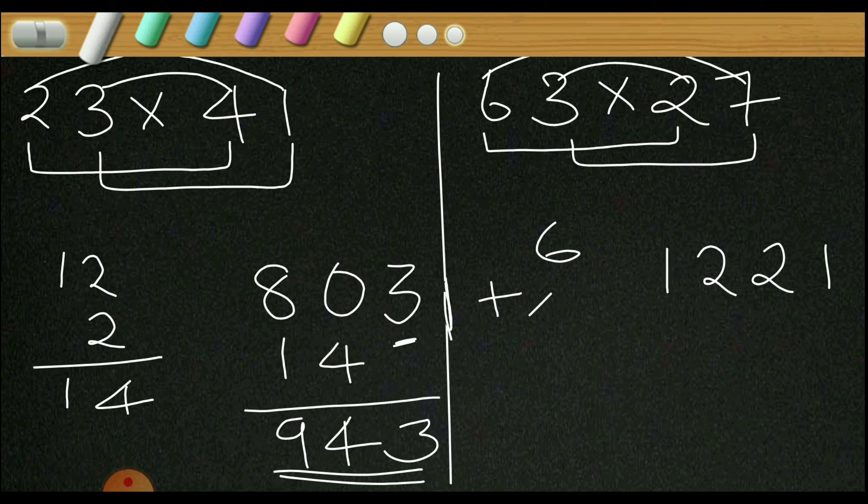Now add 48 to 1221 by leaving unit place, so it becomes like this. Now add these two numbers, it becomes 1. 8 plus 2 is 10, so write 0 here, carry 1. 4 plus 2, 6 plus 1 is 7.